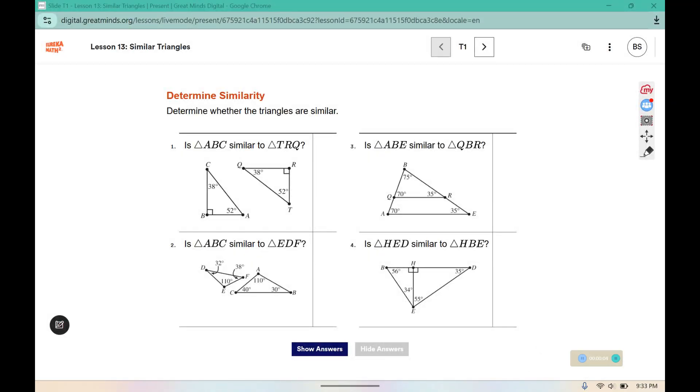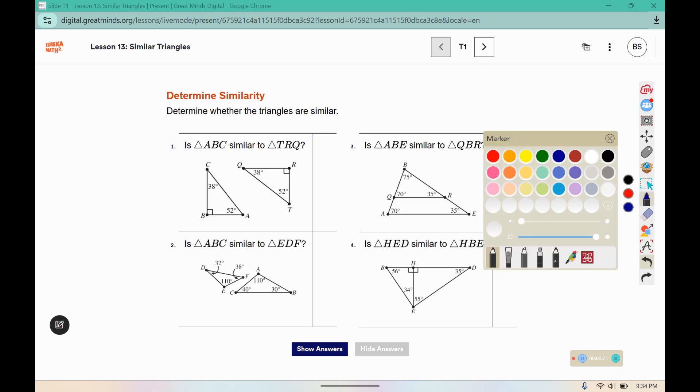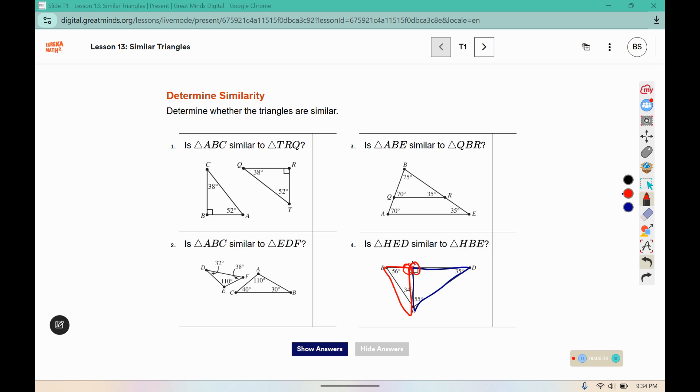You are determining whether the triangles are similar. Yesterday we talked about how AA criterion can be used to determine if they are similar. So AA criterion requires that there are at least two sets of angles that are congruent. Here in HED and HBE, I see there's a pair of 90 degree angles, but the other two angles don't match up. So these are not similar. We need two pairs that are congruent for them to be considered similar triangles.